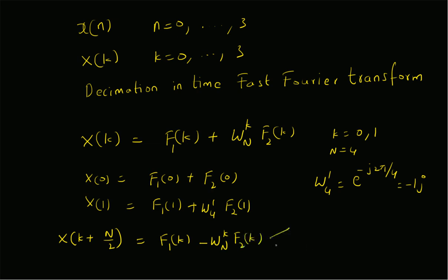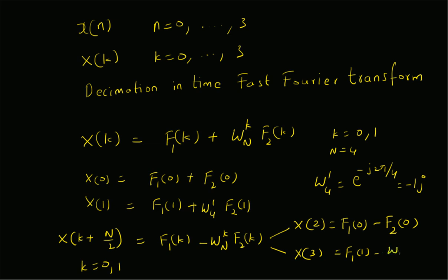Based on this, for k equal to 0, X[0 + 2] = X[2] = F1[0] − W_4^0 * F2[0], and since W_4^0 = 1, X[2] = F1[0] − F2[0]. Similarly, X[3] = X[1 + 2] = F1[1] − W_4^1 * F2[1].